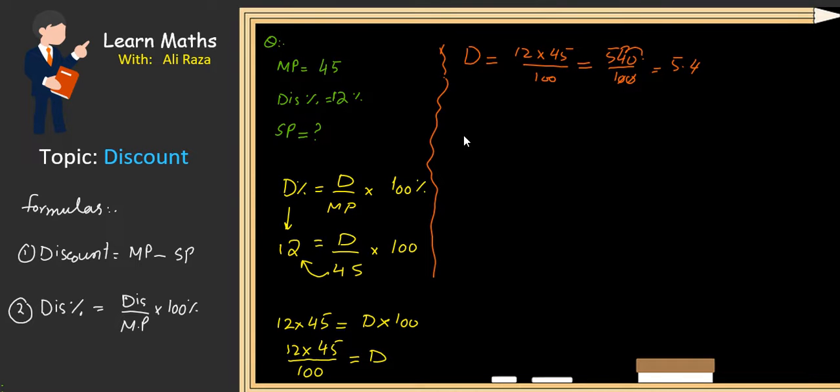And the discount is $5.4. But the question is not asking for the discount. The question is asking for SP, the selling price. This is the main question.